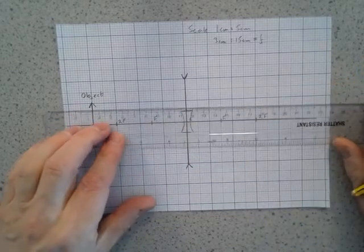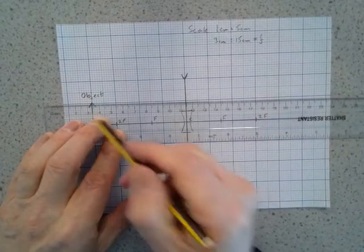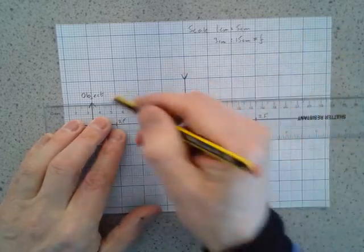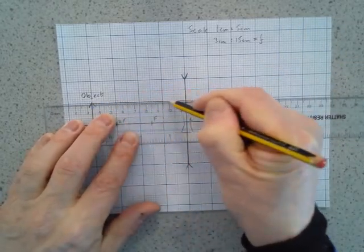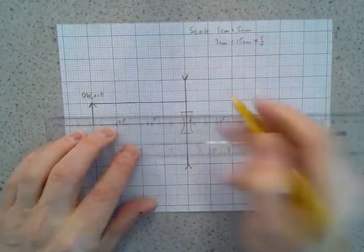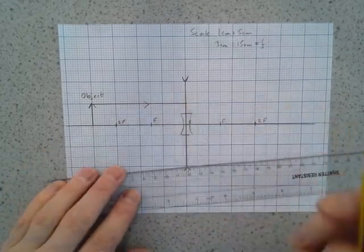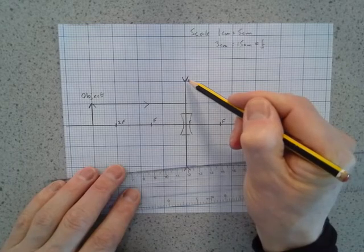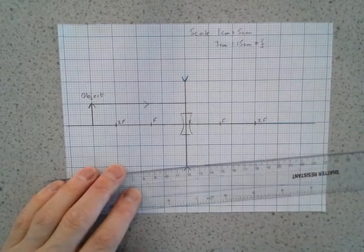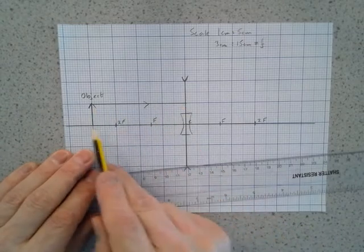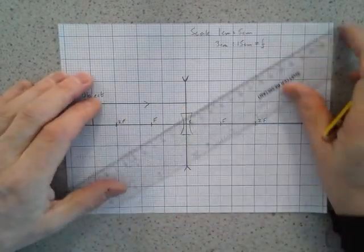The first magic ray comes from the head of the object and runs parallel to the principal axis, like so. Now when that ray gets to the lens it's going to be refracted, but this is a diverging lens so it diverges the rays of light. A ray of light that is parallel to the principal axis will be diverged.